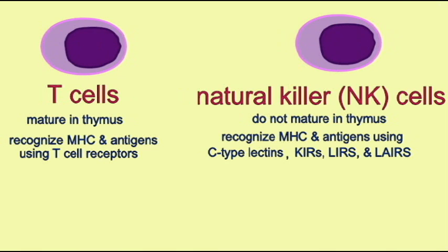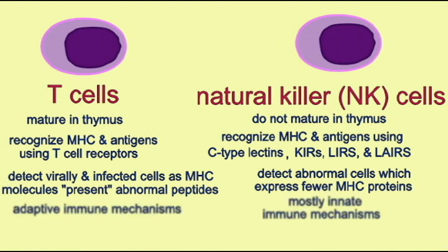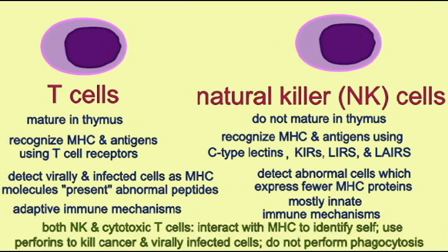Natural killer cells are capable of recognizing MHC proteins, and thus telling self, but they do not recognize the antigens bound to MHC proteins. So they have some but not all features of true T cells.